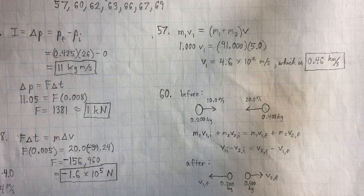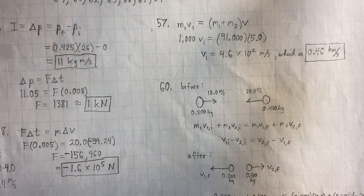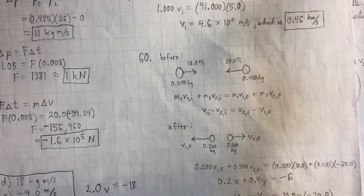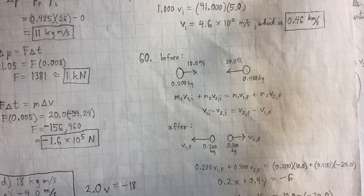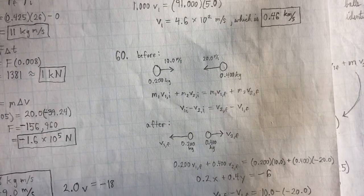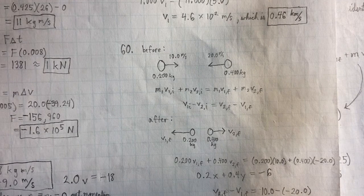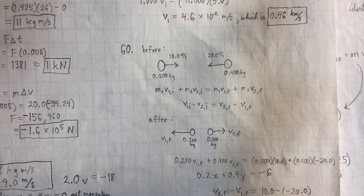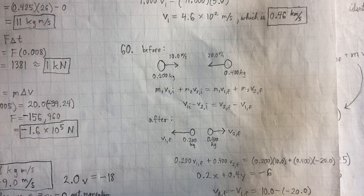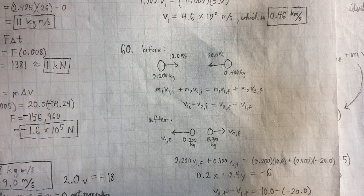Okay, number 60 is we have an elastic collision. So the balls are heading towards each other and then they bounce off each other. And when you have elastic collisions, really any collision problem, it's really good to have a before sketch and an after sketch. It's the best way to do these problems.